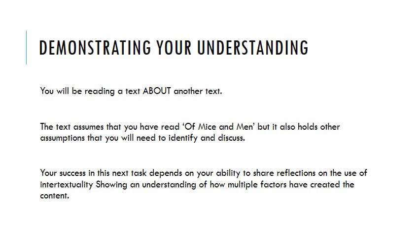So what do we actually want to get out of you in this assignment? You're going to be reading a text about another text — an interpretation of Of Mice and Men written by someone else. It's a pretty provocative interpretation that I deliberately picked to get you really thinking. The text assumes you've read Of Mice and Men, so it already has a sense of intertextuality, but it also holds other assumptions you'll need to identify and discuss. Your success depends on your ability to share reflections on intertextuality, showing understanding of how multiple factors create content.